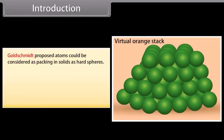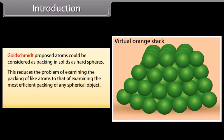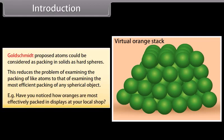Goldschmidt proposed that atoms could be considered as packing in solids as hard spheres. This reduces the problem of examining the packing of like atoms to that of examining the most efficient packing of any spherical object. For example, have you noticed how oranges are most effectively packed in displays at your local shop?